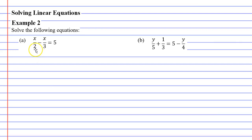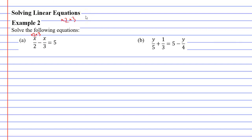What should we multiply these terms by in order to cancel both the 2 and the 3? Now, in order to cancel the 2, I would multiply by 2. And in order to cancel the 3, I would multiply by 3. So, we're actually going to multiply by both 2 and 3. Just to be clear, multiplying by 2 and by 3 is the same as multiplying by 6, because 2 times 3 is 6.